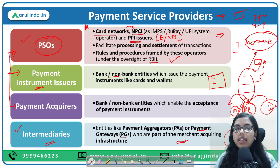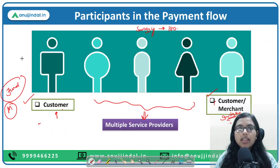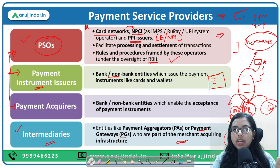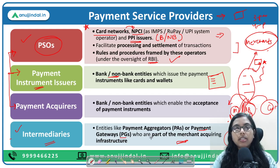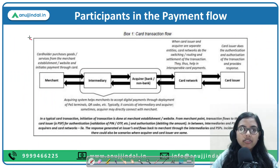Intermediaries are called so because they are part of the merchant acquiring infrastructure. To summarize payment service providers: between the customer and merchant we have four types — operators (card networks), instrument issuers (card and wallet issuers), acquirer banks that accept and intermediate the money to the merchant, and finally intermediaries which are optional and may or may not be present in every case.